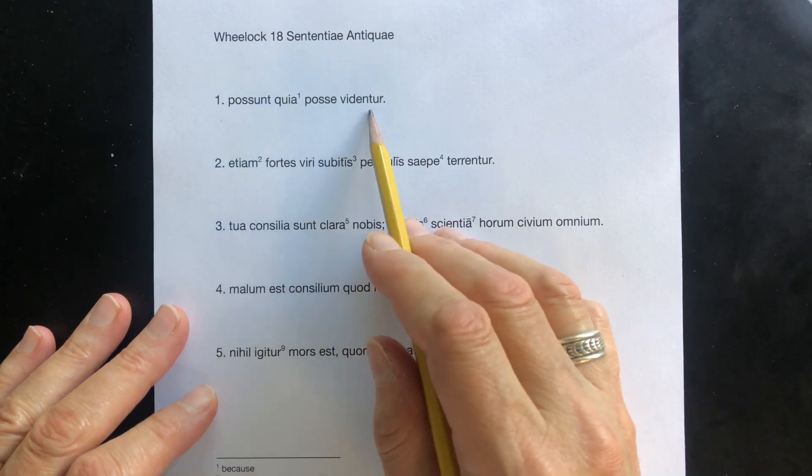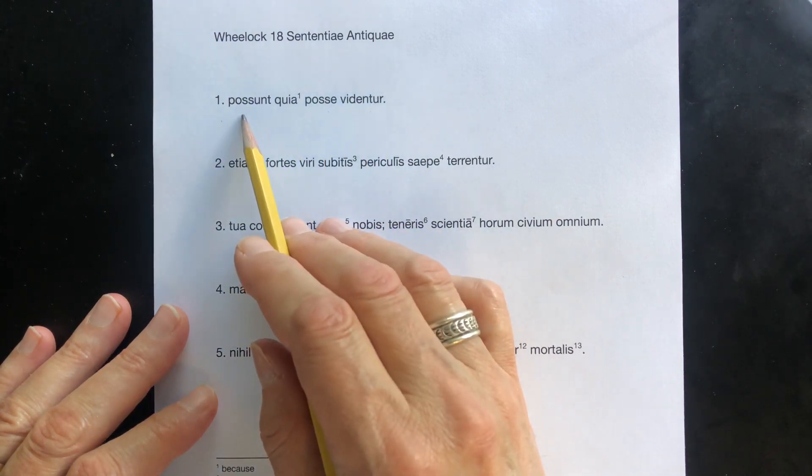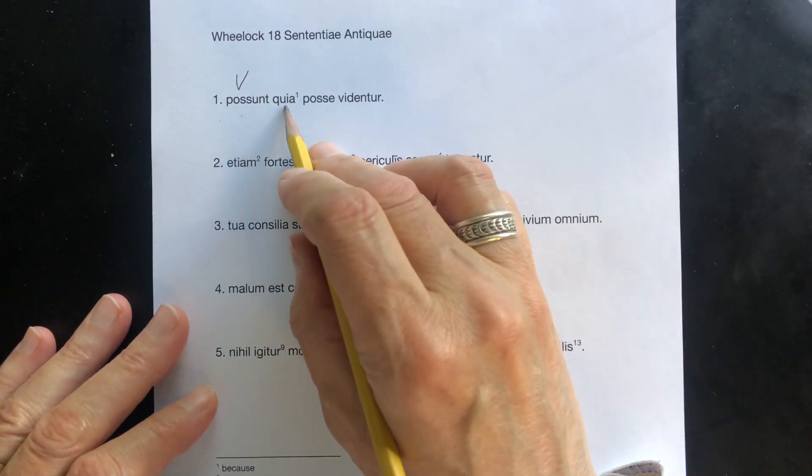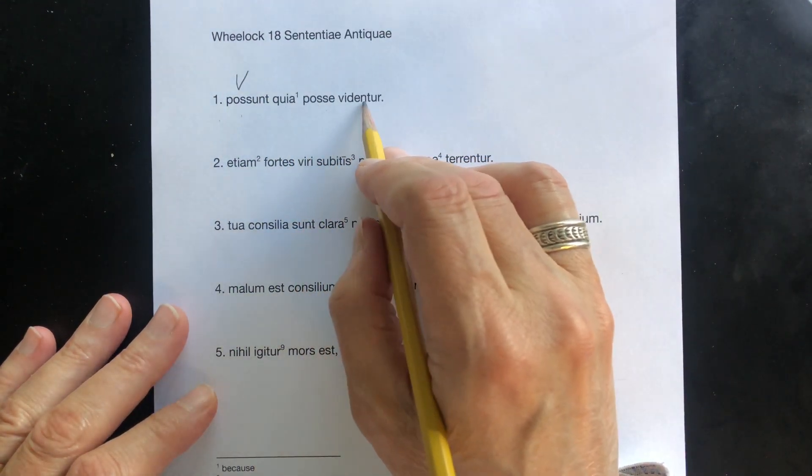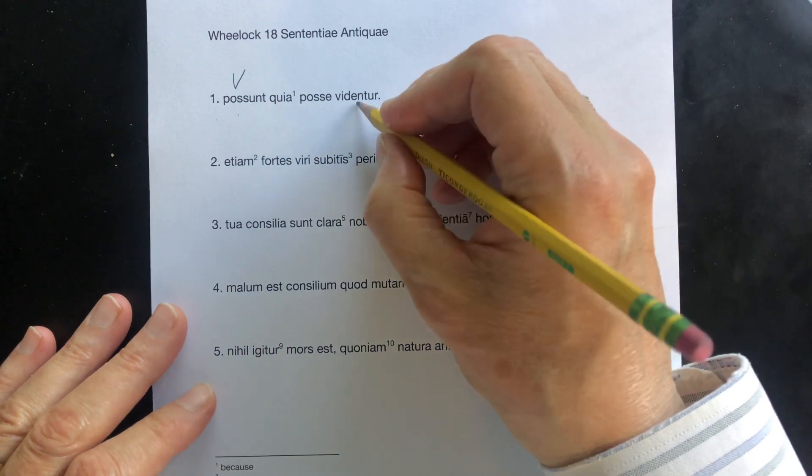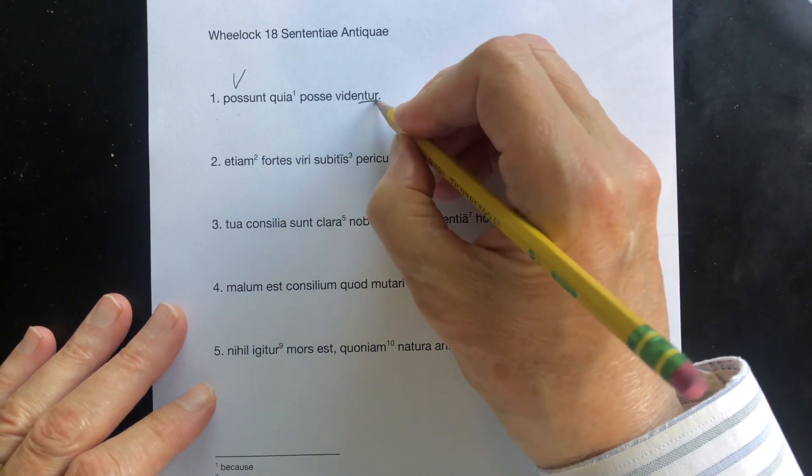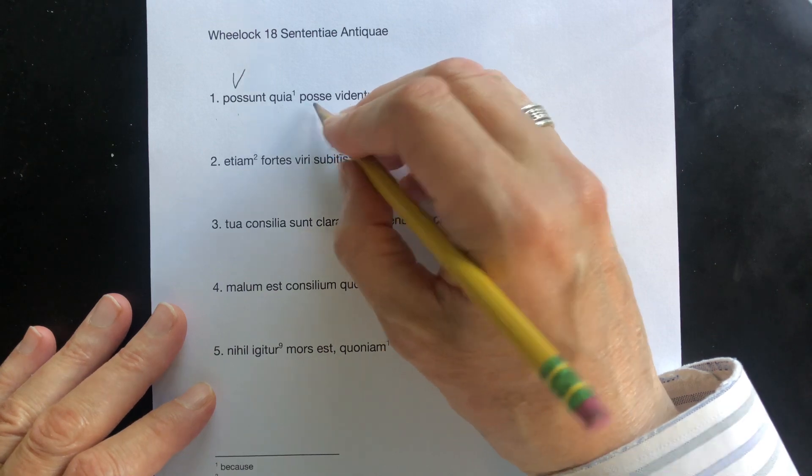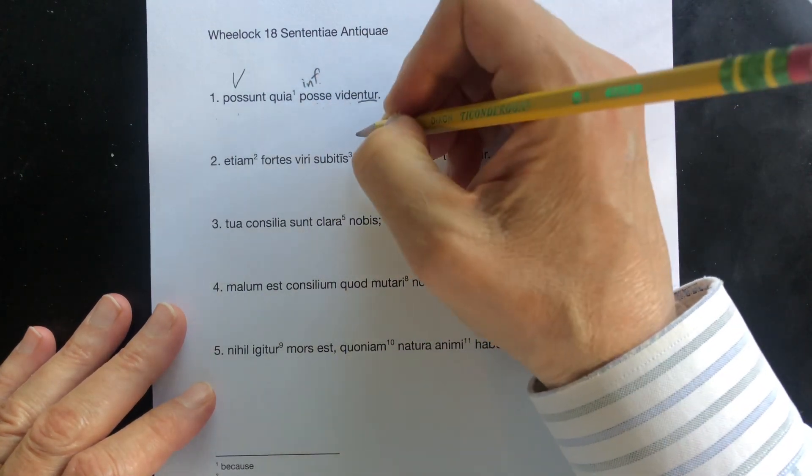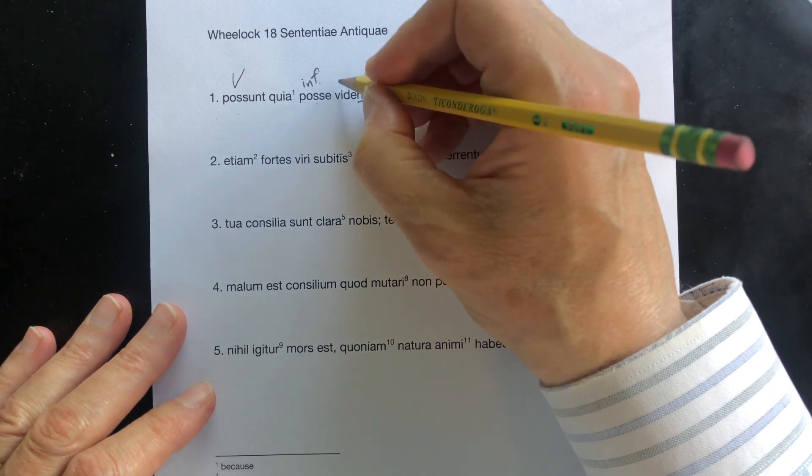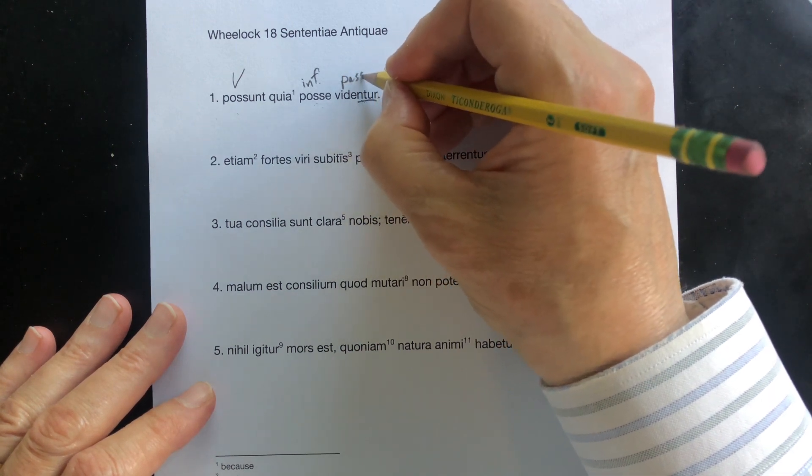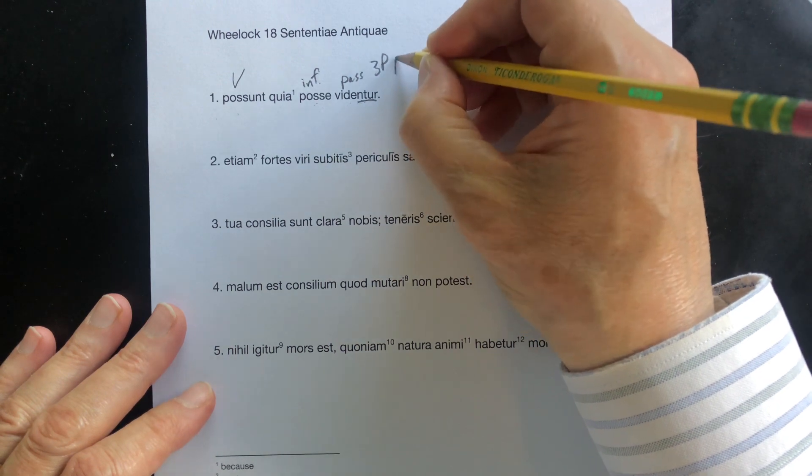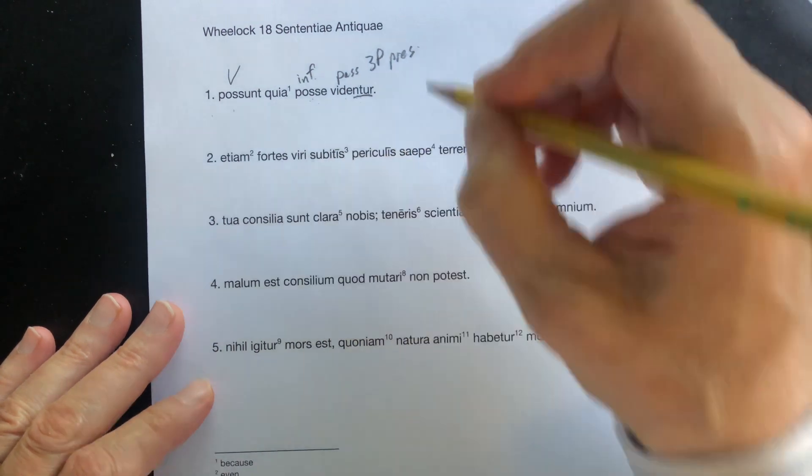Possunt quia posse videntur. Possunt, they are able, that's your main verb right there. Widentur, 'ntur' ending there, that's passive. They seem to be able. And this here is your infinitive, present active infinitive. Widentur is passive, that's third person plural, and it's present.